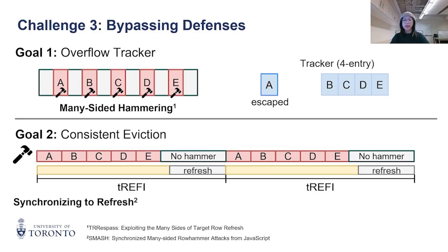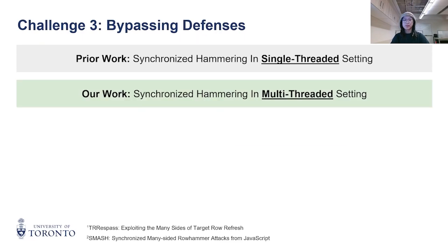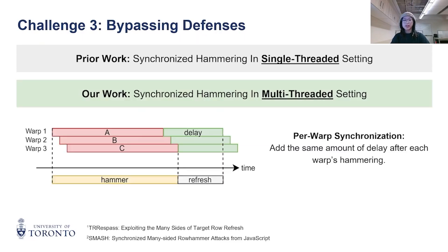This maintains the same tracker activity in each TRR interval, causing the same entry to be evicted every interval. All of the above prior work applies only to a single-threaded setting. We extend synchronization to a multi-thread setting by inserting the same delay after each warp's hammering, creating aligned gaps that allow mitigated refreshes to occur.